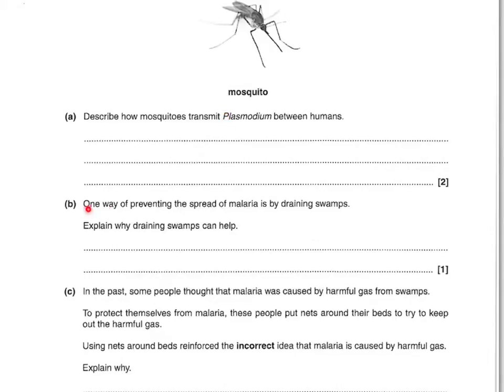It says one way of preventing the spread of malaria is by draining swamps. Explain why draining swamps can help. So swamps are where the mosquitoes breed, or where the eggs or larvae are found, and you've got to get the idea that that's why draining the swamp will be important. If you just said that's where mosquitoes breed, or that's where the mosquito eggs or larvae are found, then that's enough. You can't just say that it kills the mosquitoes, or that mosquitoes live in swamps — it's more about where they breed.